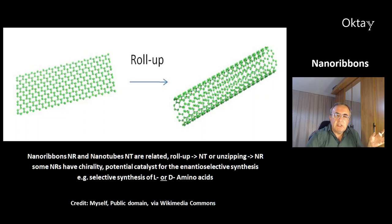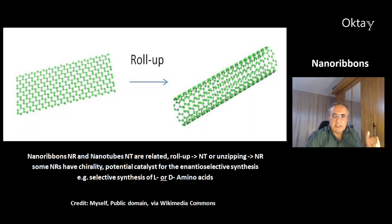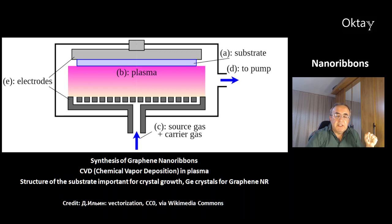Chirality could be very interesting in the future, because it could make nanoribbons a potential catalyst for enantioselective synthesis — the synthesis of selective L or D compounds of the same molecule, for example the selective synthesis of only L-amino acids or D-amino acids.